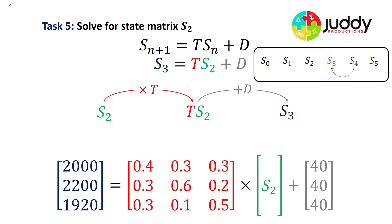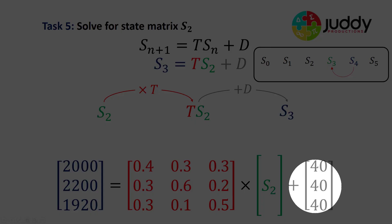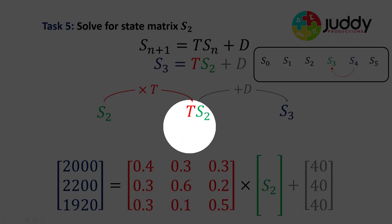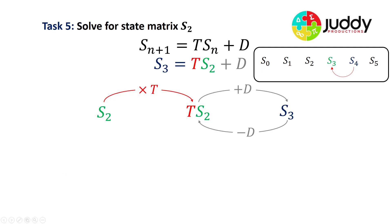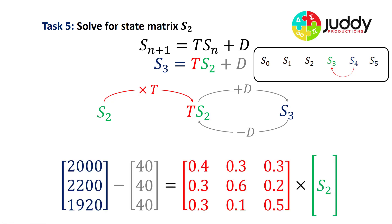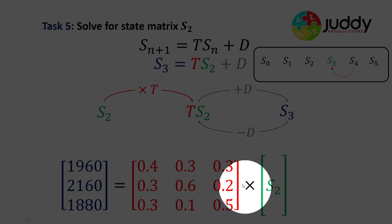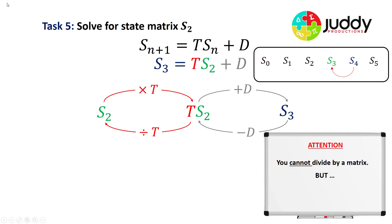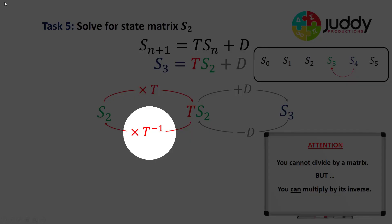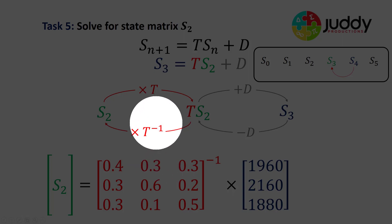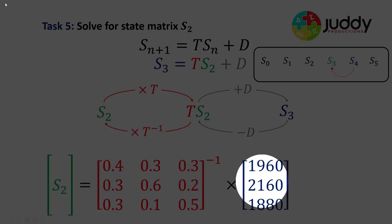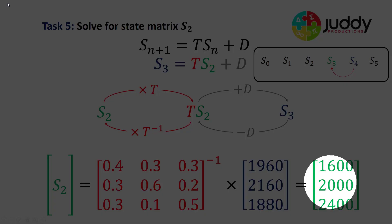We're moving backwards, trying to calculate the second state. The first step to unravel this matrix expression is to remove the forcing matrix from the right-hand side — it's currently plus 40, 40, 40. We subtract that across to the left-hand side, taking 40 from each term. Now this looks very similar to previous examples: to remove the transition matrix we multiply by its inverse. So to find S2, we take the inverse of the transition matrix and multiply it by the matrix calculated previously, giving an answer of 1600, 2000, 2400.